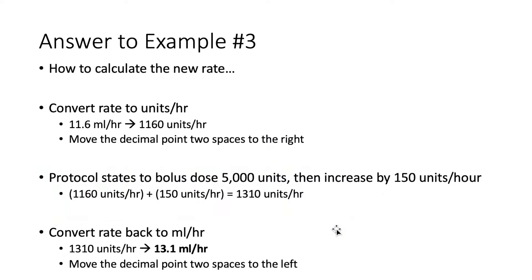To calculate the new rate for example three, we convert the current rate to units per hour. 11.6 mls per hour, moving the decimal point two spaces to the right, equals 1160 units per hour. The protocol states to give a bolus of 5000 units, then increase by 150 units per hour. So 1160 plus 150 equals 1310 units per hour. Moving the decimal point two spaces to the left converts this back to 13.1 mls per hour — our new rate.